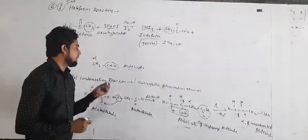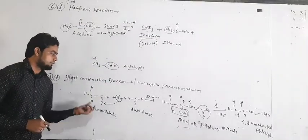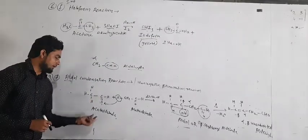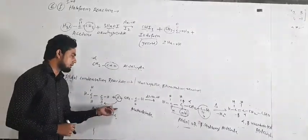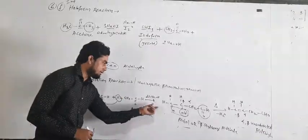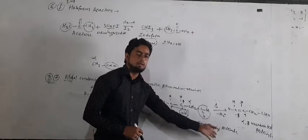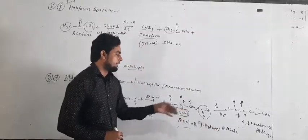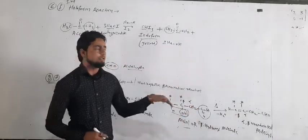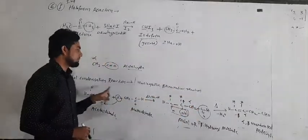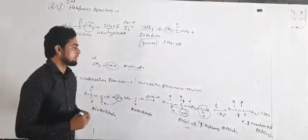So in this way, the aldol condensation reaction is defined as the reaction in which two similar molecules of aldehyde and ketone react to each other in presence of dilute NaOH to form the aldol — beta hydroxy aldehyde — and then on heating with loss of water molecule, it forms the alpha-beta unsaturated aldehyde. This is the aldol condensation reaction.